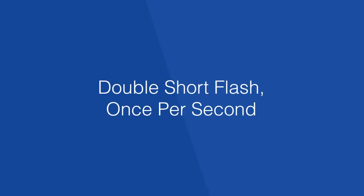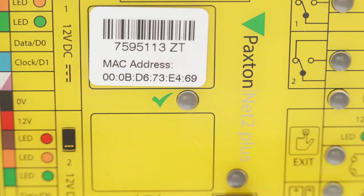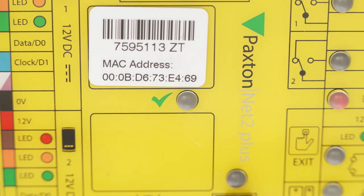Double short flash once per second. A double short flash once per second means the ACU is functioning correctly but is offline, not communicating with the NET2 server.